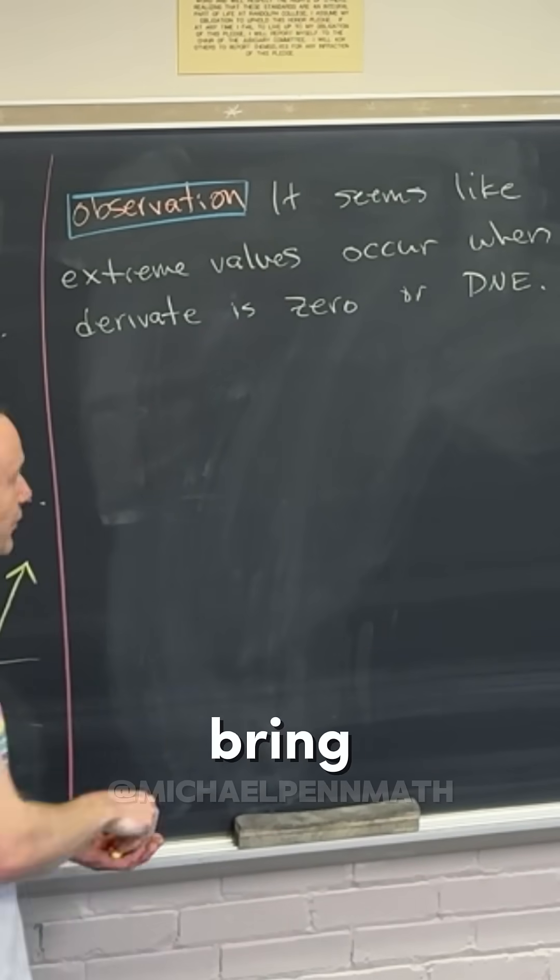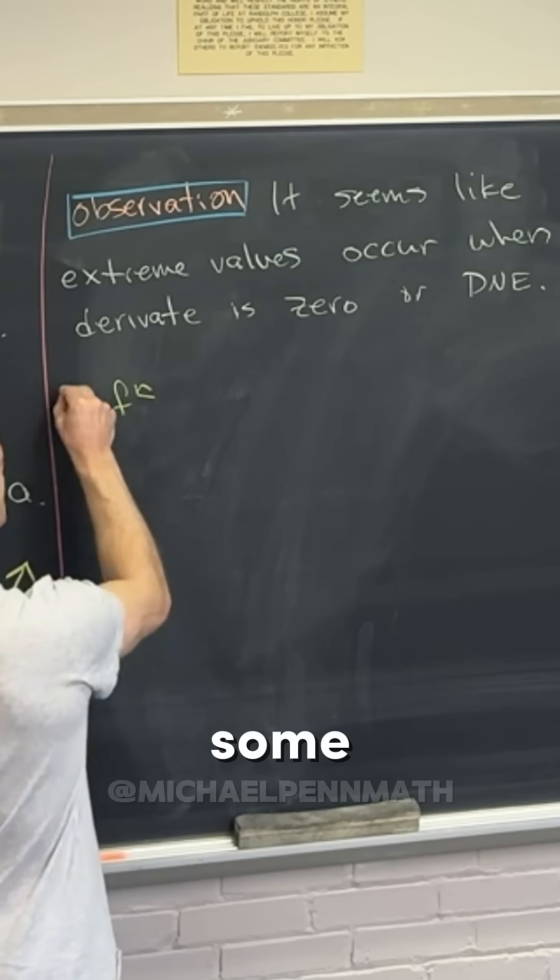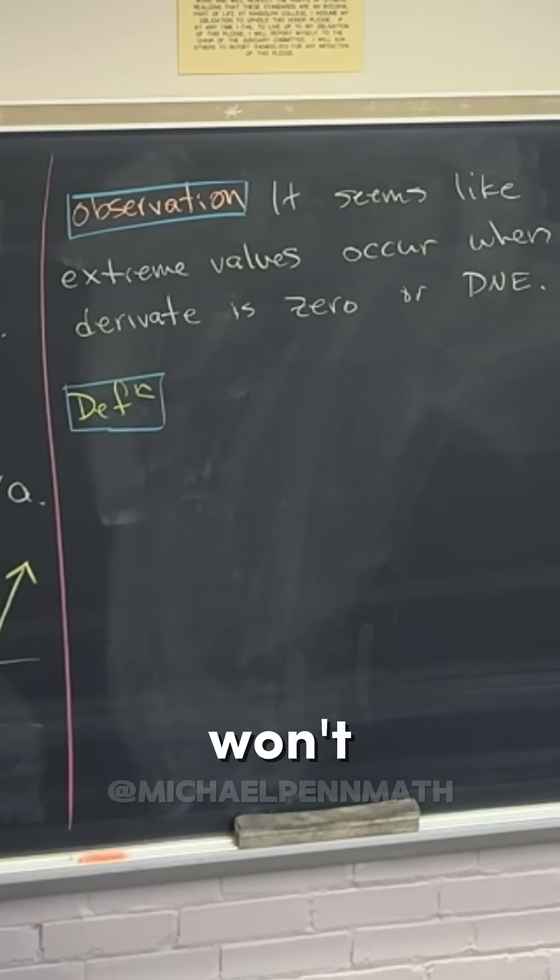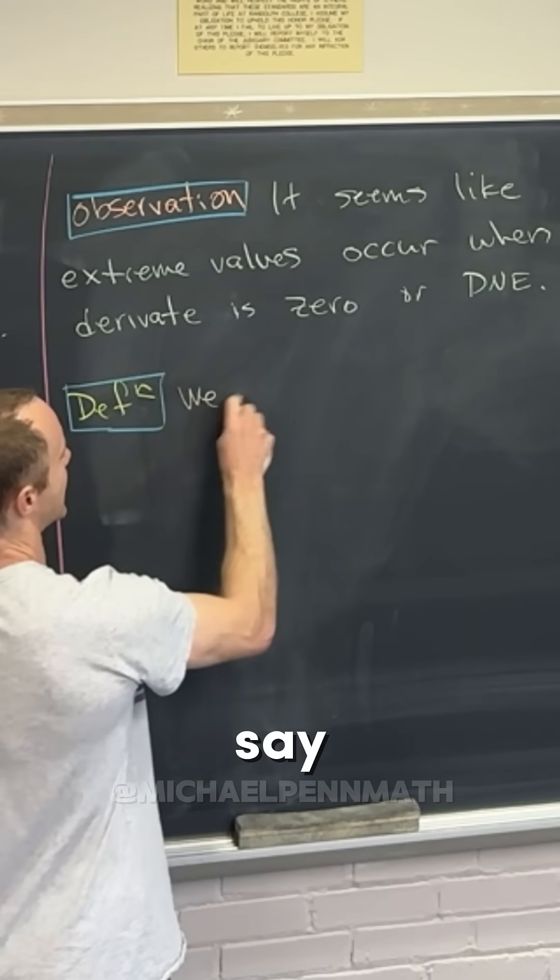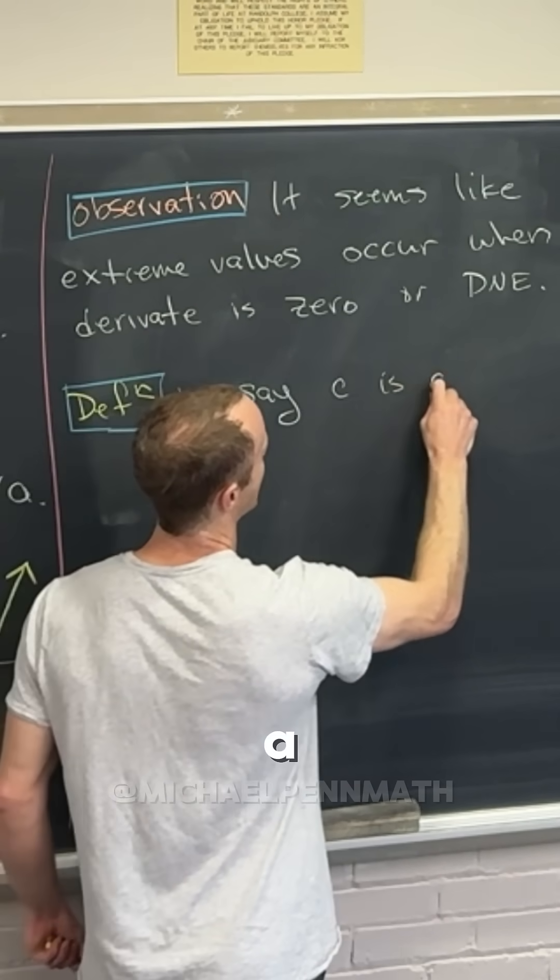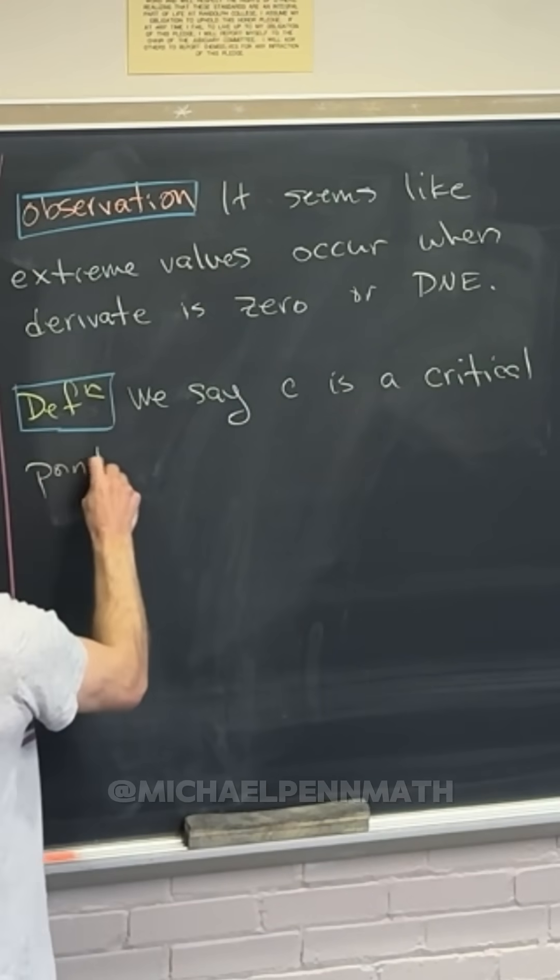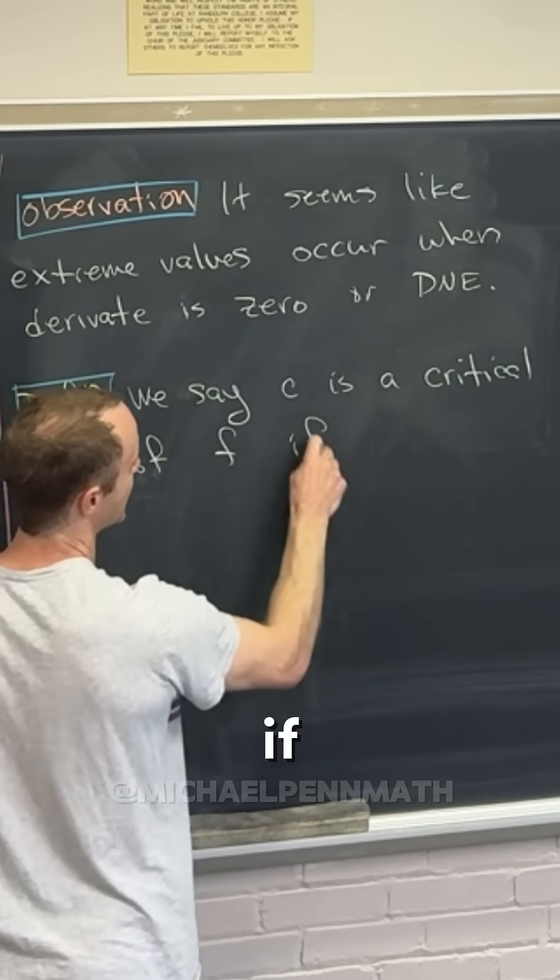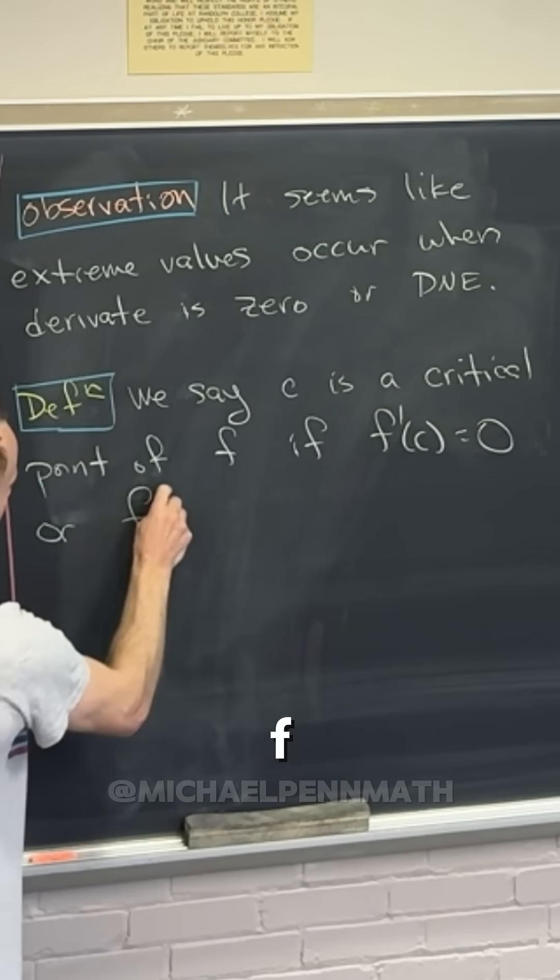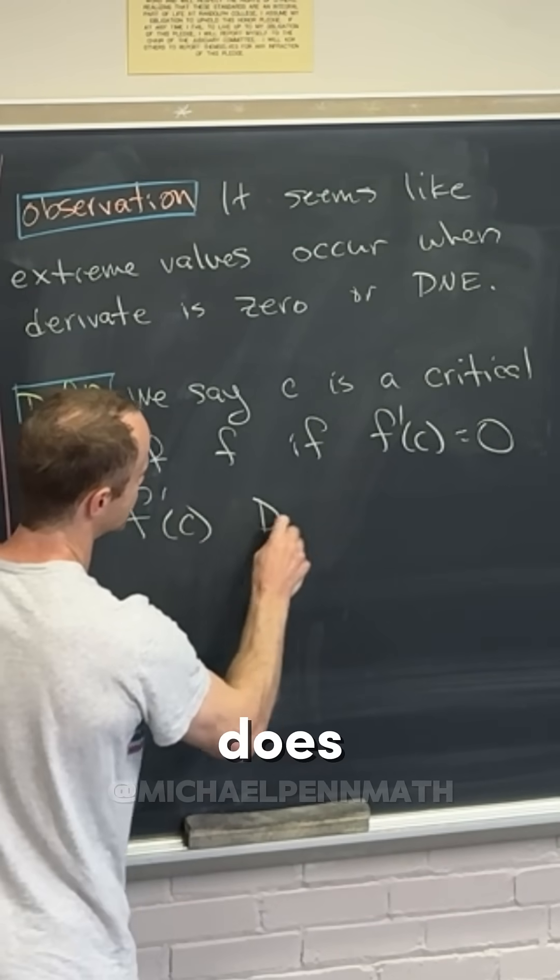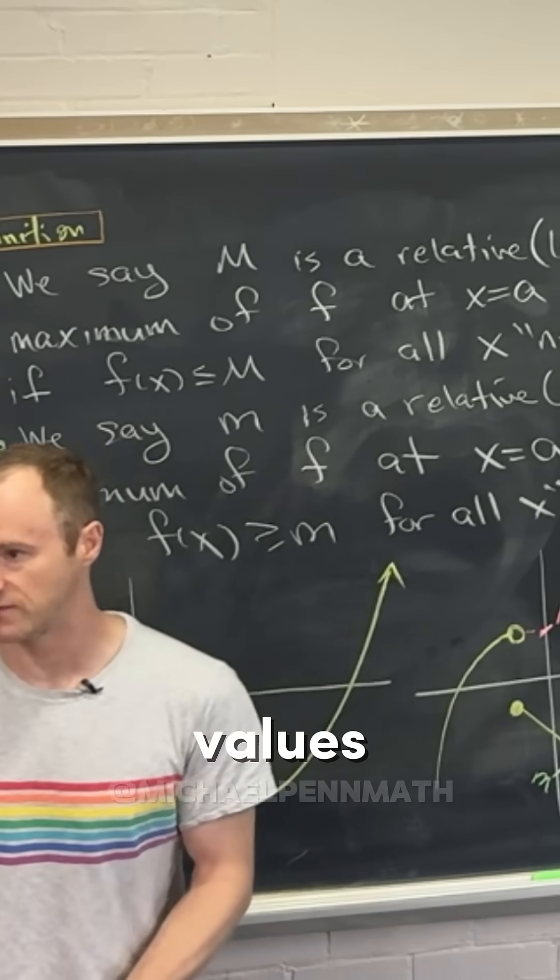Okay, so I'm going to bring that to a definition and then we're going to stop. But this definition will be enough to do some homework type problems. It's just we won't have a chance to do examples. So we say C is a critical point of a function F if F'(C) equals zero or F'(C) does not exist. So these are your potential places where you get extreme values.